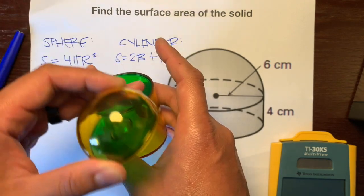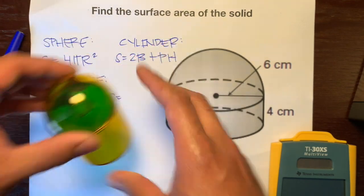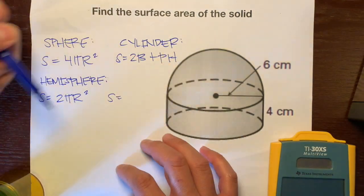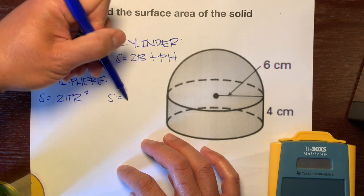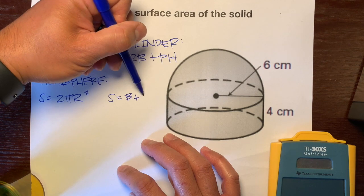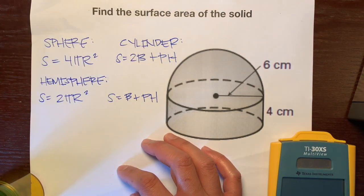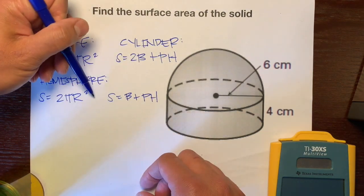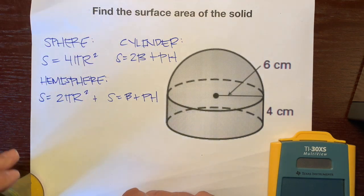We don't need this second base right here. What we're going to do with this formula is take out one of the bases because it's covered up by the hemisphere and just put B + base perimeter and height. And then, we'll add those two together.